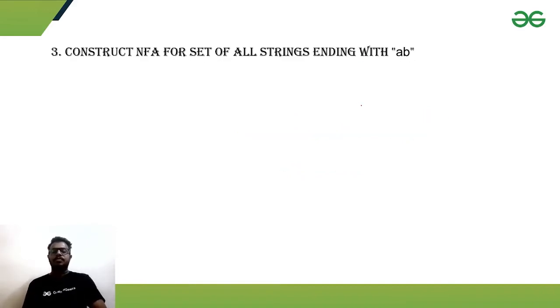Now, let us check for the last one, which is all strings ending with ab. It means that in starting, there can be anything. But after that, while ending, our last symbol should be A and B. Only if we get A or B as last symbol, last two symbols, then we will go to the final state.